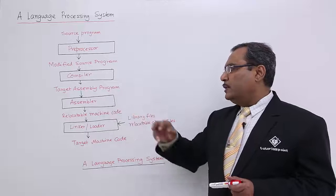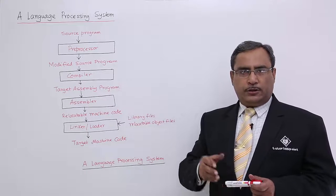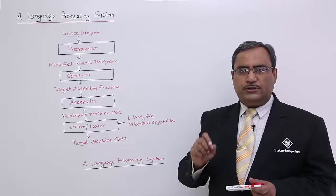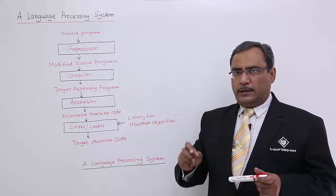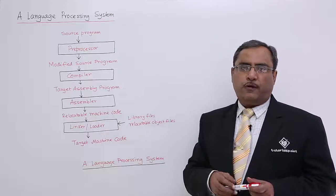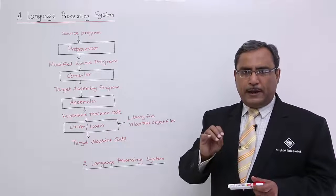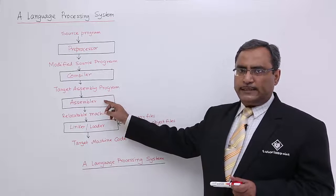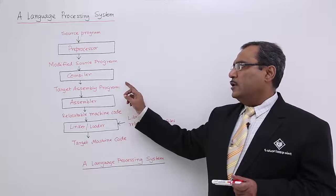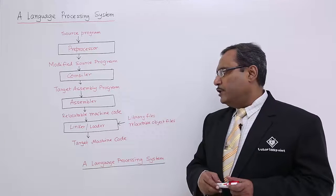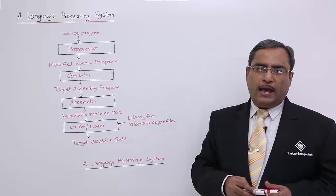Then the assembler will come into the play and it will convert that assembly language program to the actual executable code. But, the addresses for each and every module will be in some relocatable machine code format. So, what will happen? Here, the actual machine code will be produced by this assembler, taking the input assembly language program as input and producing relocatable machine code as output.